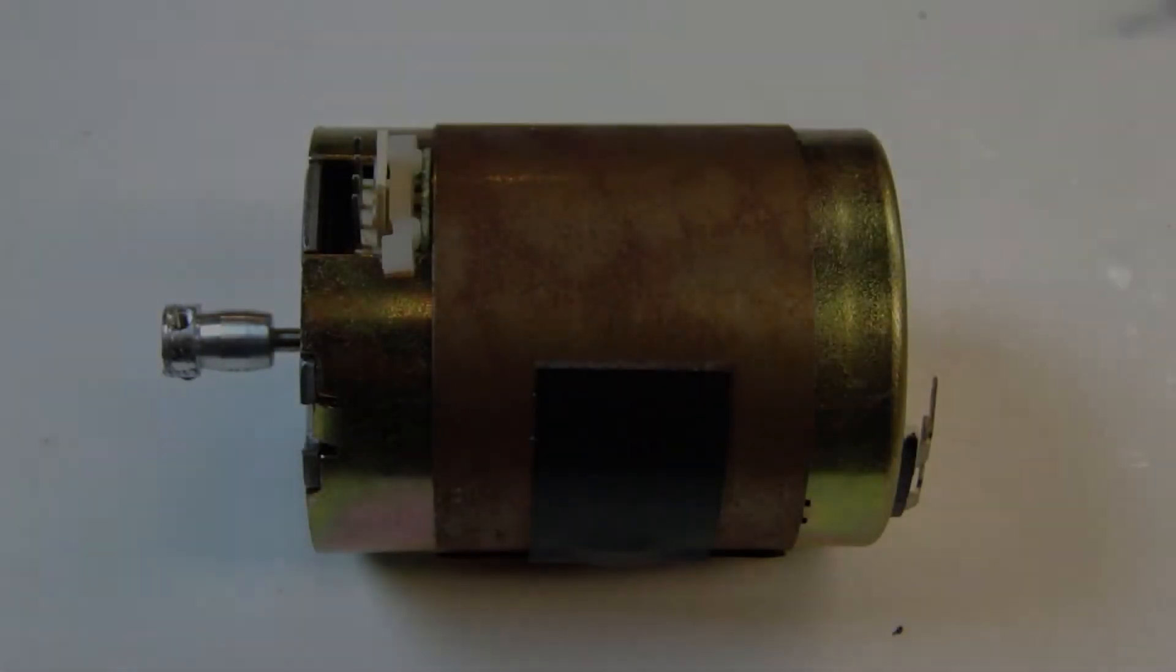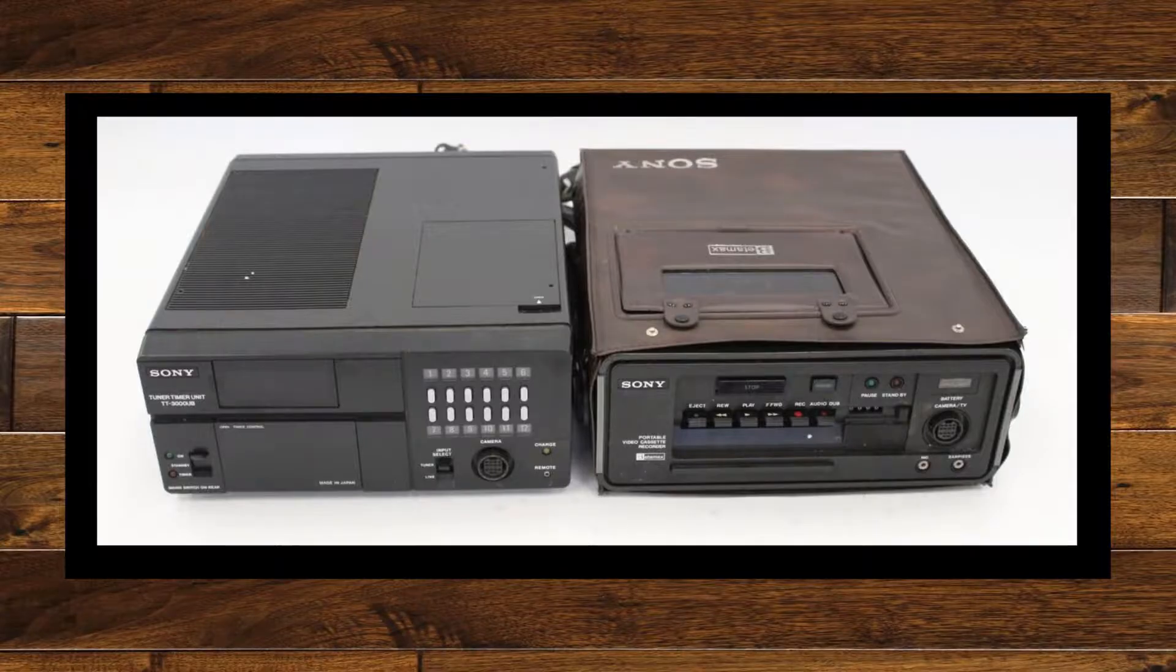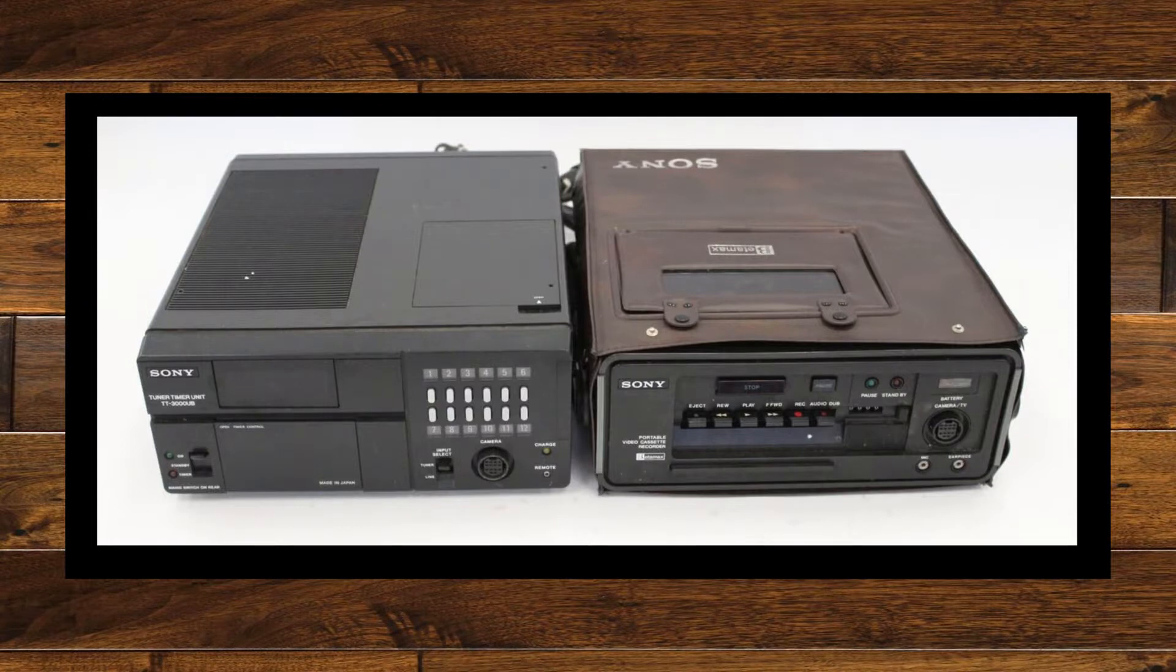Hello viewers and welcome back to another episode. Today we're going to be taking a look at the Sony BHF 1100D capsule motor. This motor can be found in a number of machines, but today's machine we'll be working on is a Sony SL3000 portable Betamax.